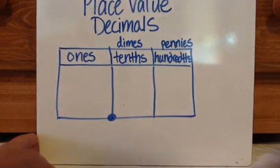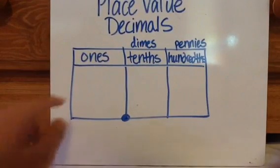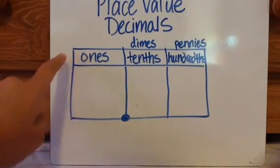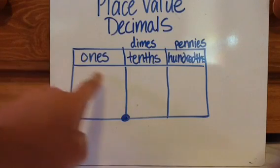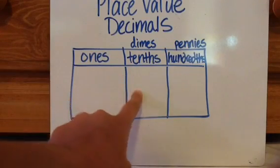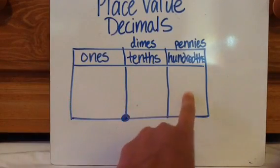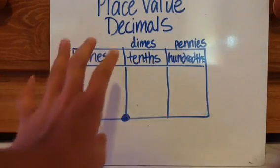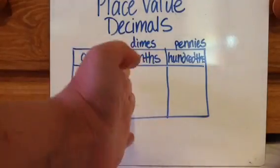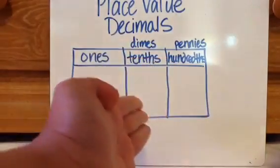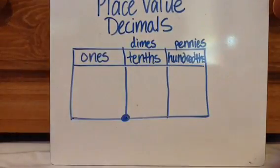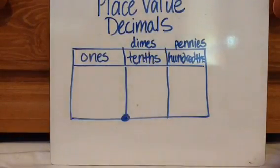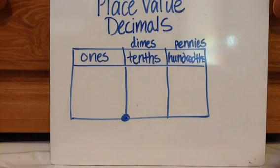Because if you think about it, you have ones, tens, hundreds — so ones is in the middle, and then everything to the right is a repeat of what's on the left, but with '-th' at the end. So there's no ones place after the decimal. It starts with tenths and hundredths.